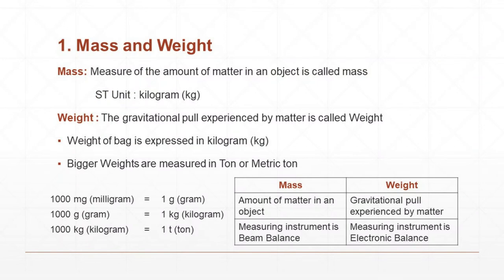Mass is the measure of the amount of matter in an object. Weight is the gravitational pull experienced by matter. The differences between mass and weight: Mass is amount of matter in an object. Weight is gravitational pull experienced by the mass.